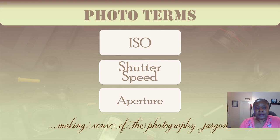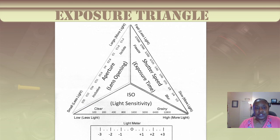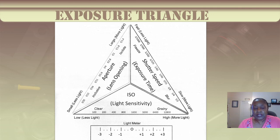So let's look at the exposure triangle. This is what it looks like: aperture or f-stop, shutter speed or exposure time, and ISO or light sensitivity. As we talked about before, exposure is the most important aspect of every photograph, and that most important aspect is light. Without light, there can be no photograph. So we want to try to use light to our advantage. Exposure is simply a term used to describe the brightness of the photograph.